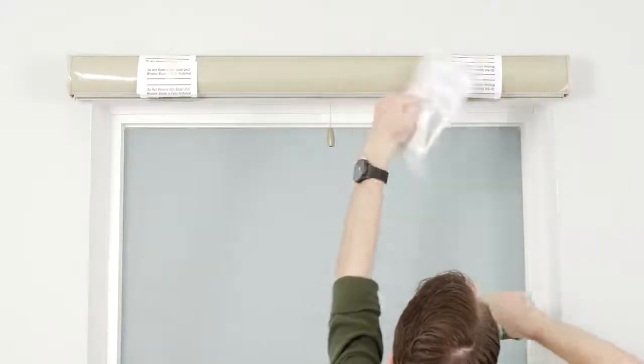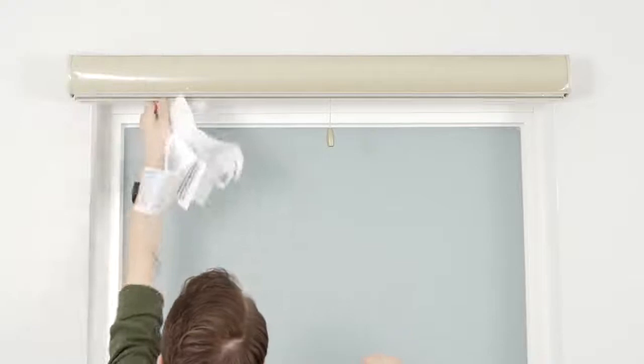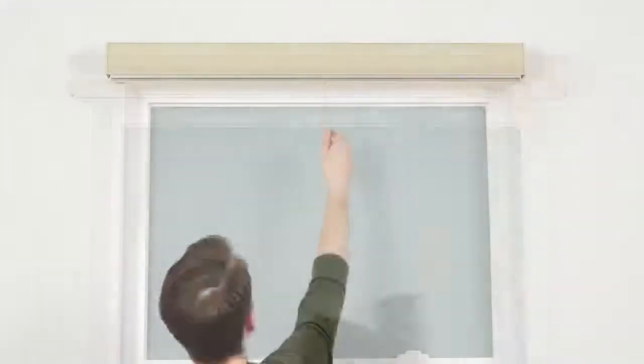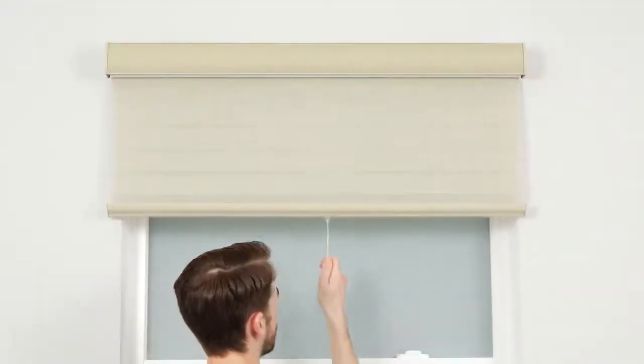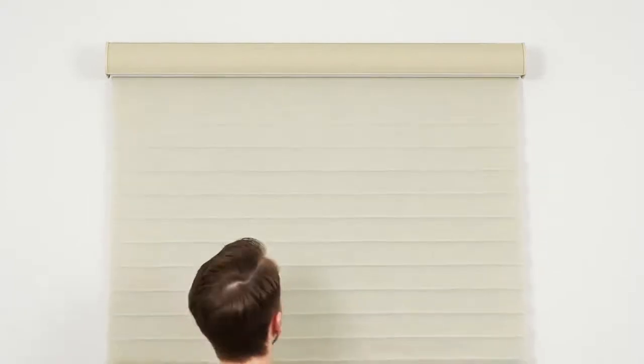Before testing the shade, you may now remove the protective bands and plastic film from the cassette. Now, just pull the shade up and down a few times to make sure everything looks and works right.